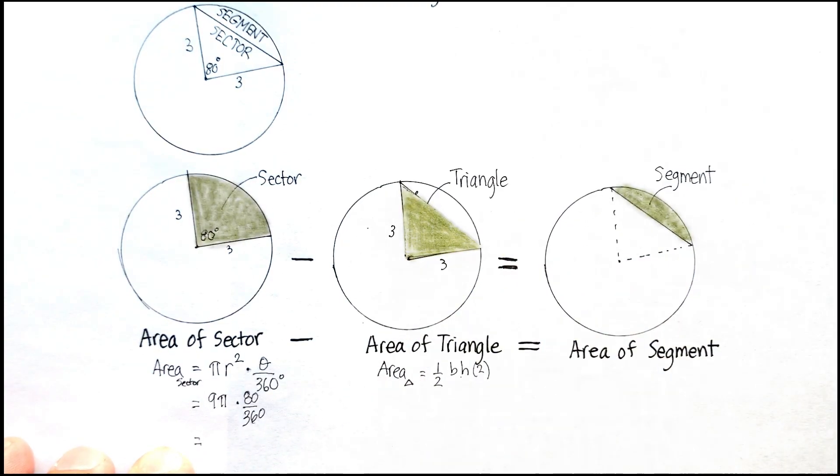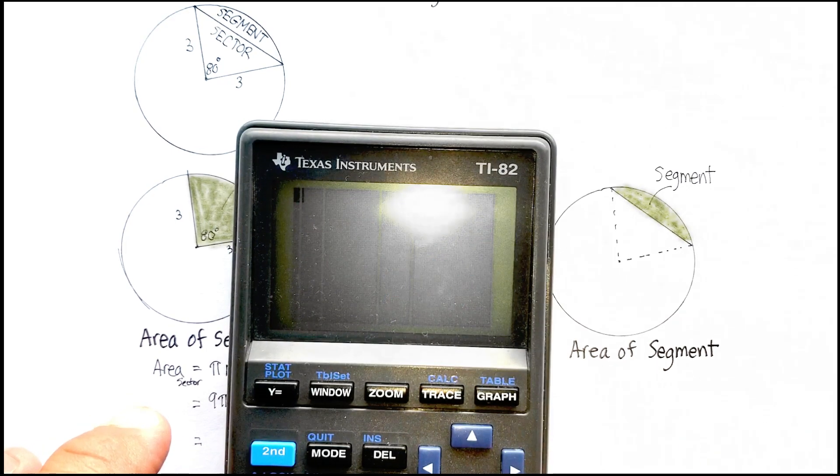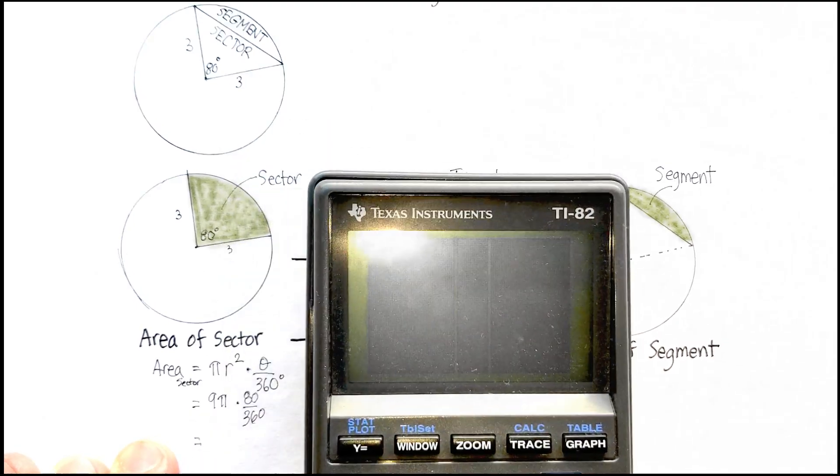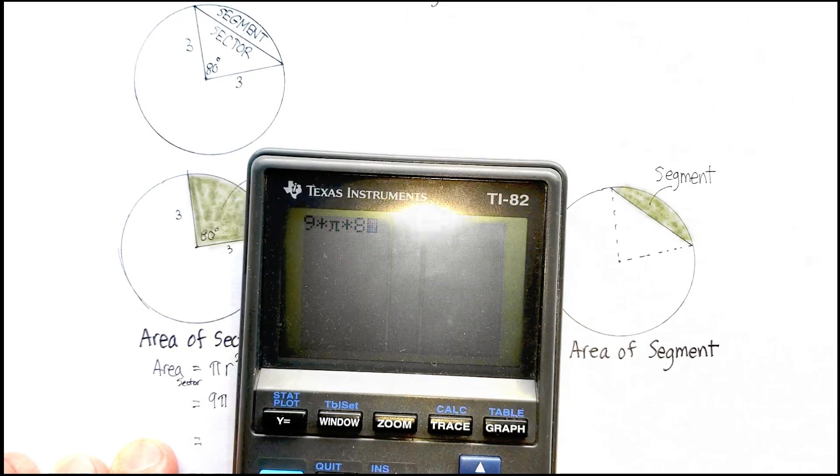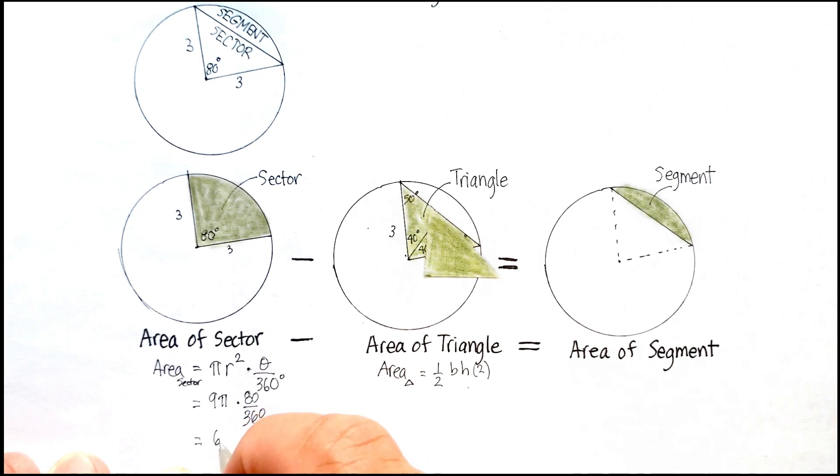It's going to be nine pi times 80 over 360. And when I put that into my calculator, I am going to get 6.28 units squared, okay? 6.28 units squared.